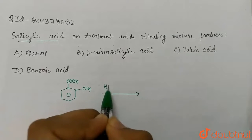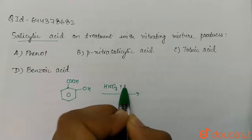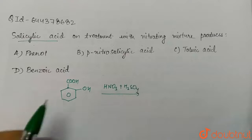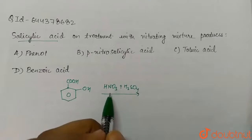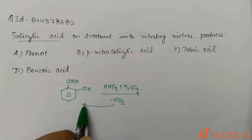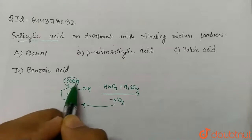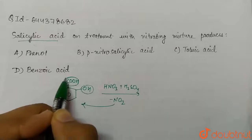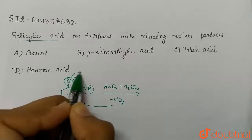The nitrating mixture is HNO3 plus H2SO4. This is our nitrating mixture, which supplies NO2 group to this compound. Here we can see that we have COOH and OH, and this COOH is ortho-para directing group.